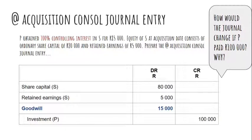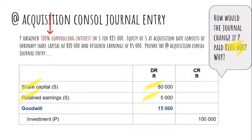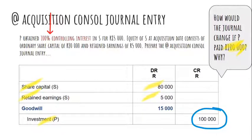How would the at acquisition journal entry change if we assume that P paid R100,000 for this 100% interest as opposed to R85,000? I'm changing the scenario. When you now do the consolidation journal entry at acquisition, you will again eliminate the equity of S at acquisition date — debit share capital, debit retained earnings with the R85,000. That eliminates against the common item, the investment of now R100,000. And suddenly you see that I now need a balancing entry, which is my goodwill.